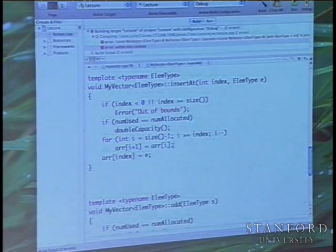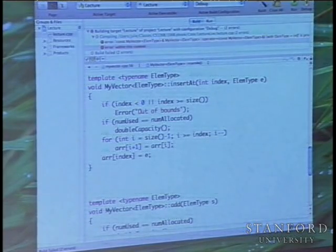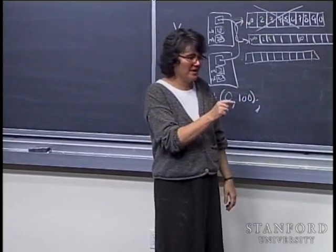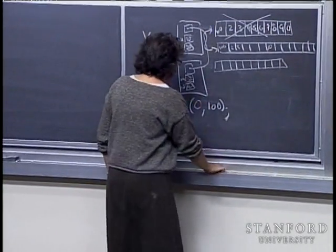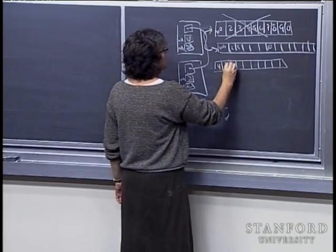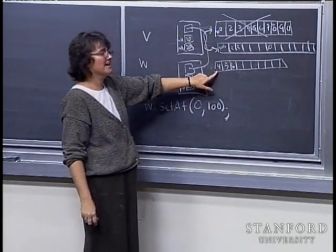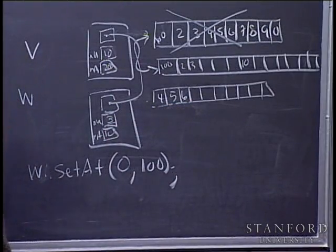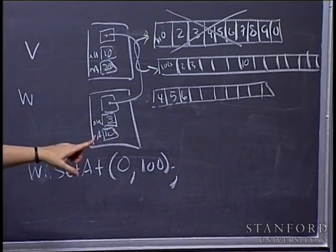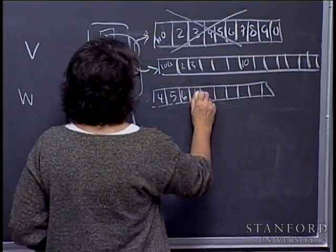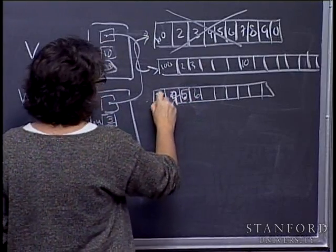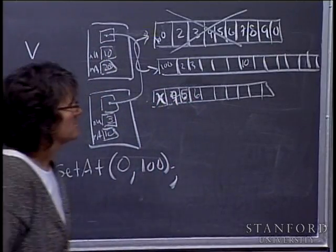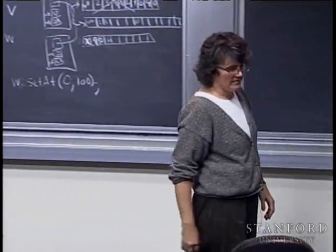Why run that loop backwards? If you try it the other way — say you have 4, 5, 6 and you're inserting at index 0 — you can't start from the beginning and move 4 on top of 5 without making a mess. It's easier to just move the 6 over, then move the 5 over, then move the 4 over, and then write your new element in the front. So I have insertAt, and I can probably test it.